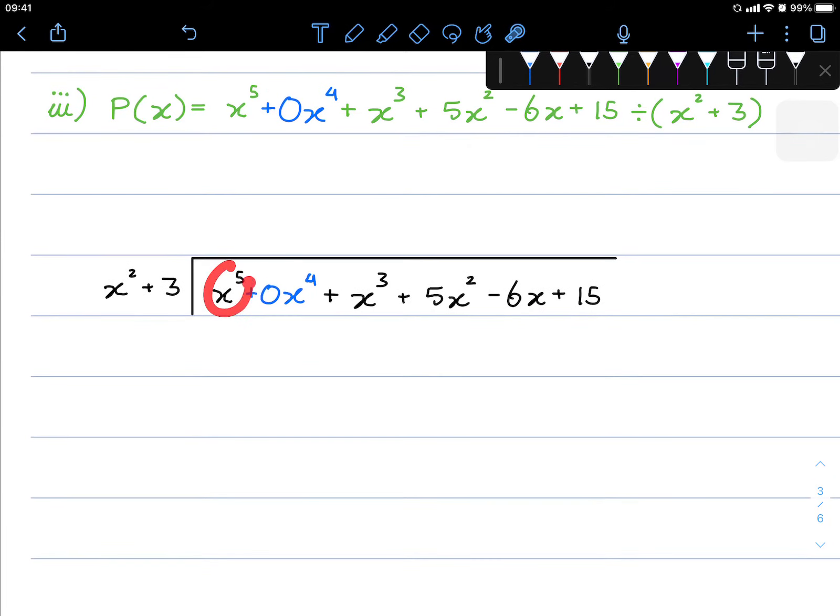We'll do our division. x to the power of 5 divided by x squared is x cubed. Let's do our multiplication. That will give us x to the power of 5. Our multiplication here is going to be 3x cubed. Notice how I wrote it to make sure it's matching the like term.